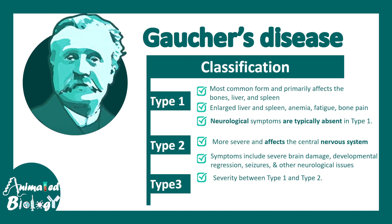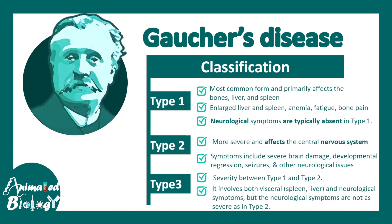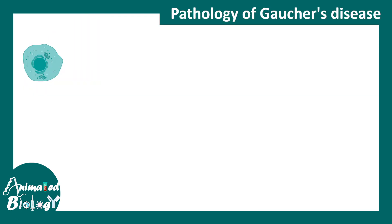Type 3 has a severity in between type 1 and type 2, involving both visceral organs and neurological components. Now let's talk about the pathology of Gaucher disease.